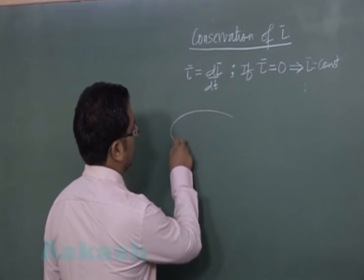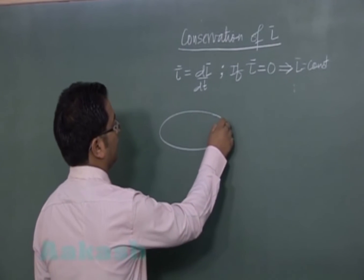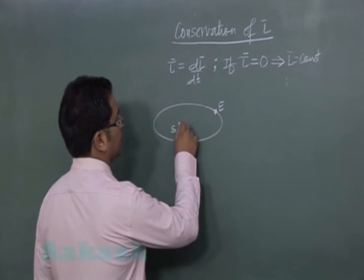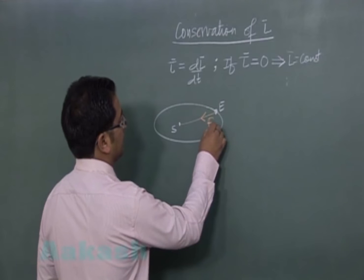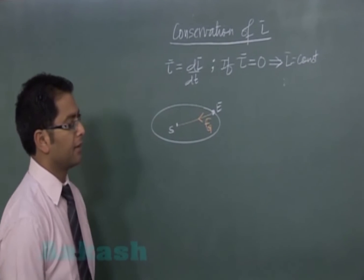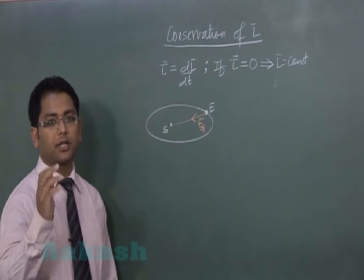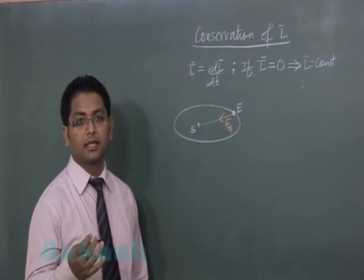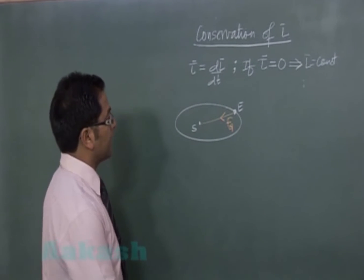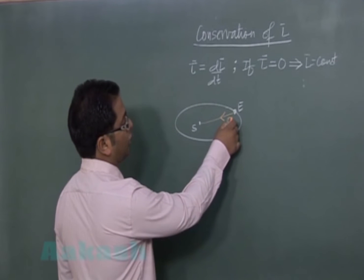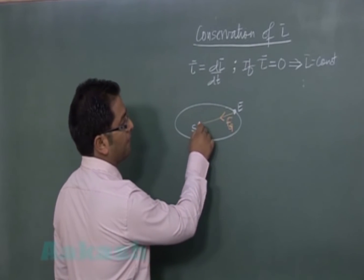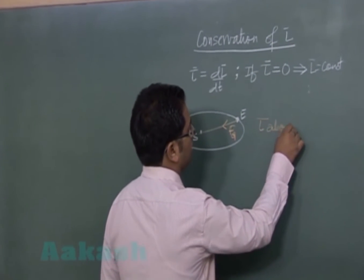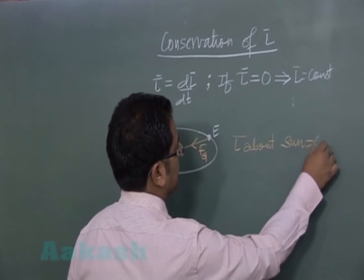If we take the elliptical motion of Earth around the Sun, you would see that Earth is attracted towards the Sun with the force of gravitation. I am talking only about the analysis of Earth. Is the net force on Earth zero? No. But if we look at the torque of this force with respect to the Sun, the force is passing through the Sun, so the torque about the Sun is zero.